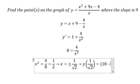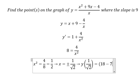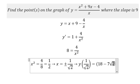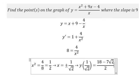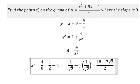We get y equals 18 minus 7 times the square root of 2, all over 2. And the second point: